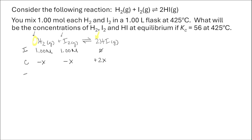That leads me to my equilibrium concentrations, which is the E in my ICE chart. I'll report these in terms of x. I started with one molar H2, it decreases by x, so at equilibrium the concentration of H2 is 1 minus x. Similarly, the concentration of I2 at equilibrium is 1 minus x. The concentration of HI initially was zero, it increases by 2x, so at equilibrium the concentration of HI is 2x.